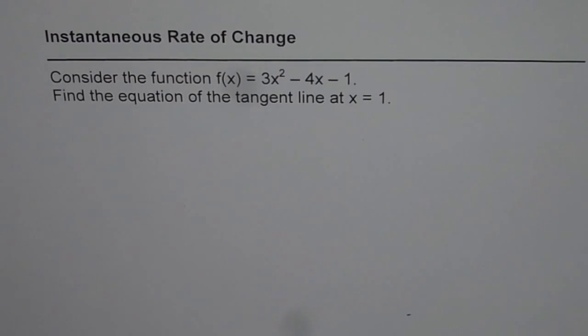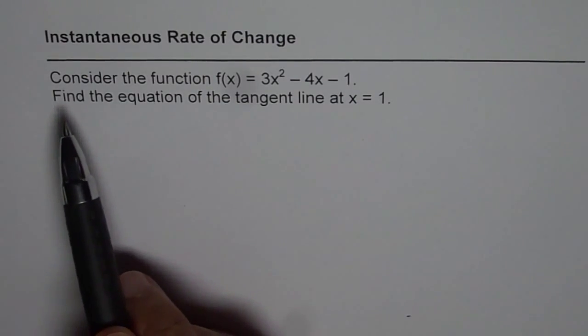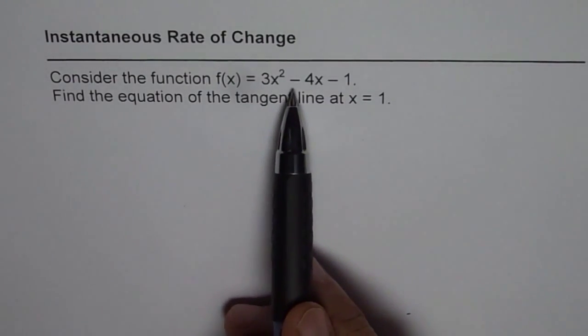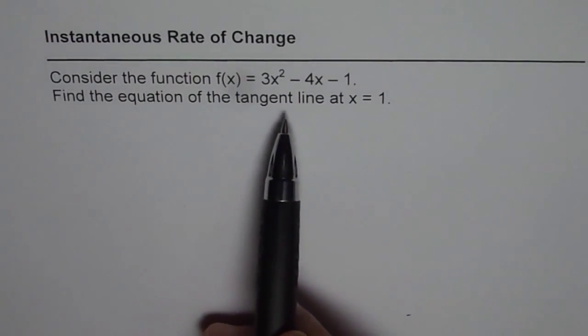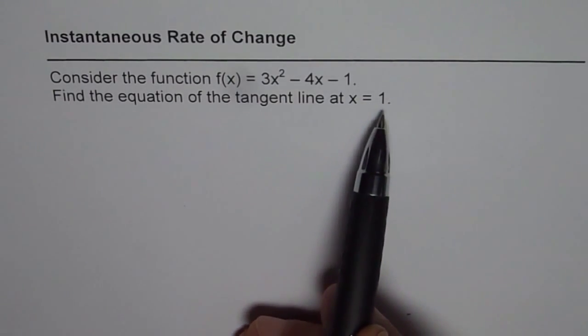Here is last minute preparation for our unit 4 test on instantaneous rate of change. Chapter 4, Advanced Functions, Grade 12. The question here is, consider the function f(x) = 3x² - 4x - 1. Find the equation of tangent line at x = 1.